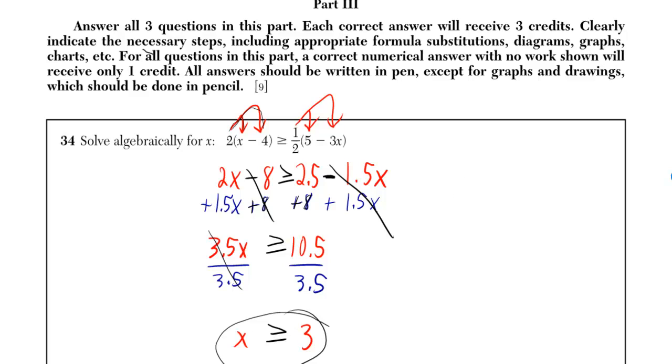Now, if you got up to the step of 2x minus 8 is greater than or equal to 2.5 minus 1.5x, and you decided not to push the x terms to the left side, but to push the x terms to the right side, well, then what you would have had to do is you would have had to do minus 2x and minus 2x. And this is fine. It will give you the right answer.